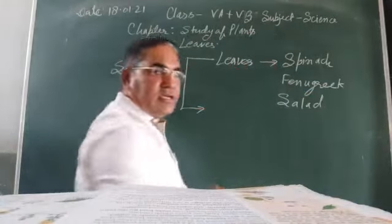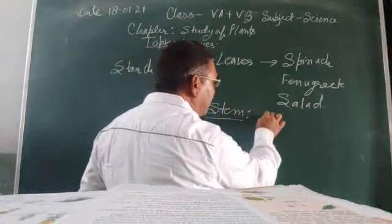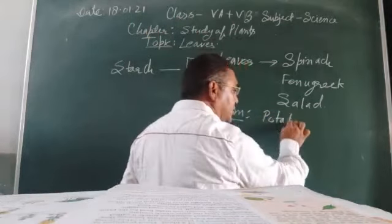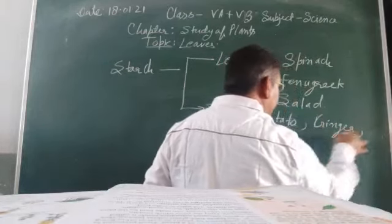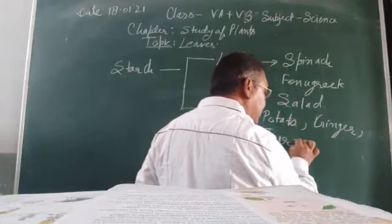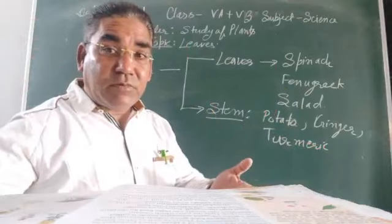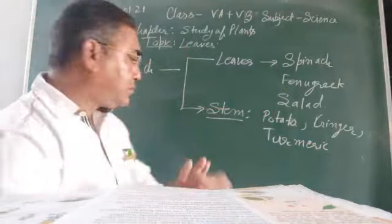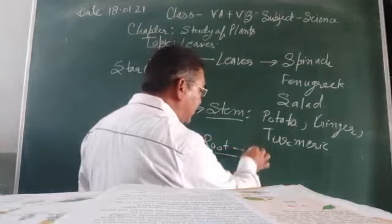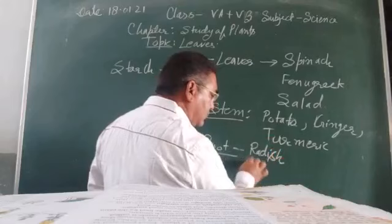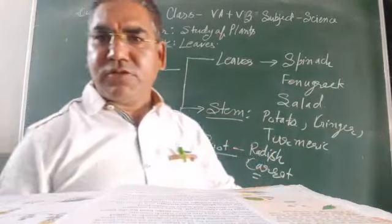There are some plants in which food is stored in the stem, like potato, ginger, and turmeric. There are also plants in which food is stored in the form of roots - roots that we eat include radish and carrot. These are common examples of stored food in various parts of plants.